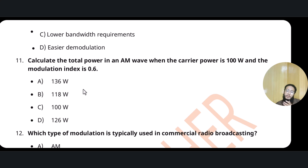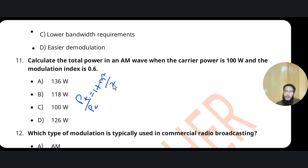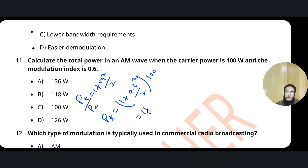Question 11: What is the total power in an AM wave when the carrier power is 100 W and the modulation index is 0.6? The formula is: total power / carrier power = 1 + (m² / 2). So total power = 100 × [1 + (0.6² / 2)] = 118 W. Option B is correct. Remember the equation: 1 + M²/2.